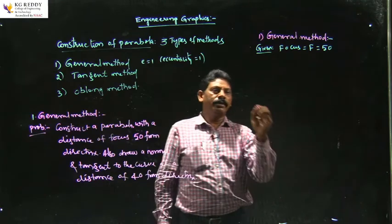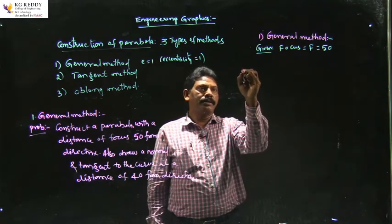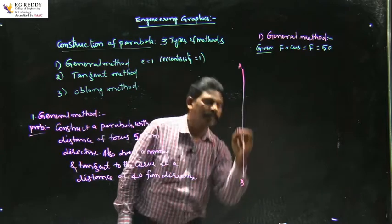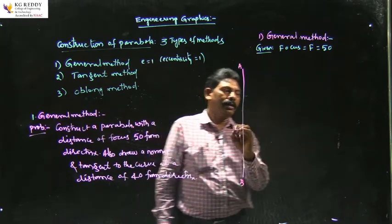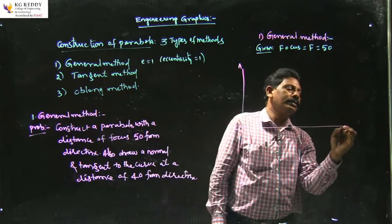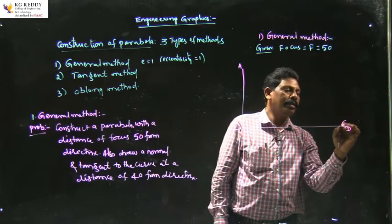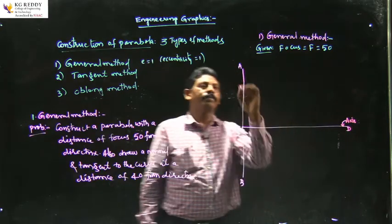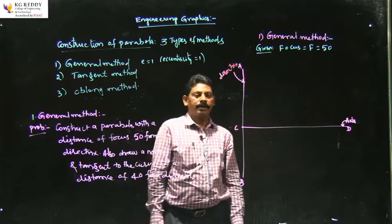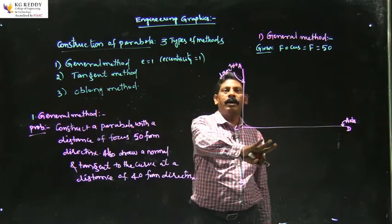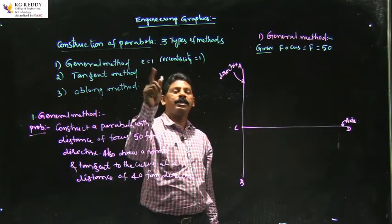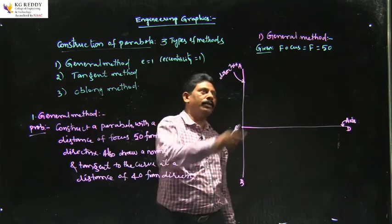For this construction, draw the directrix AB. Locate a midpoint C and draw a horizontal line perpendicular to the directrix — this is called the axis CD. The construction of the parabola is similar to the ellipse; only the eccentricity value is different. First, locate the focus F, which is at a distance of 50 from the directrix.